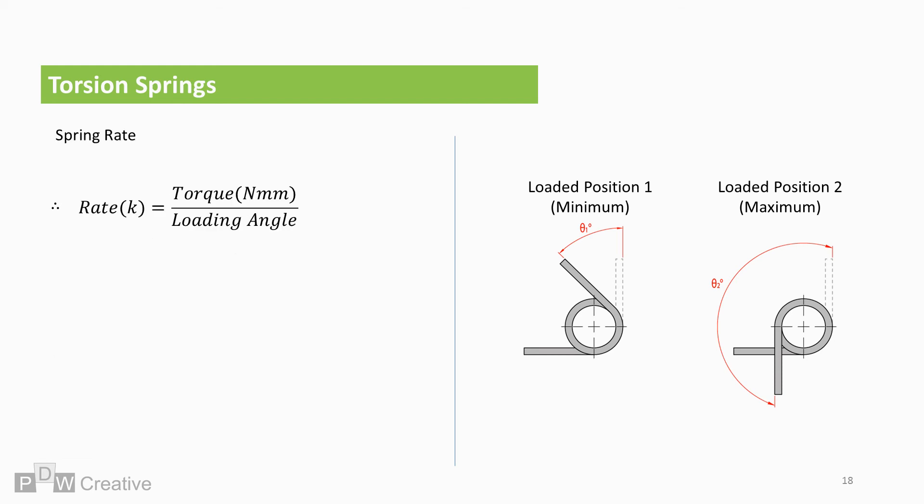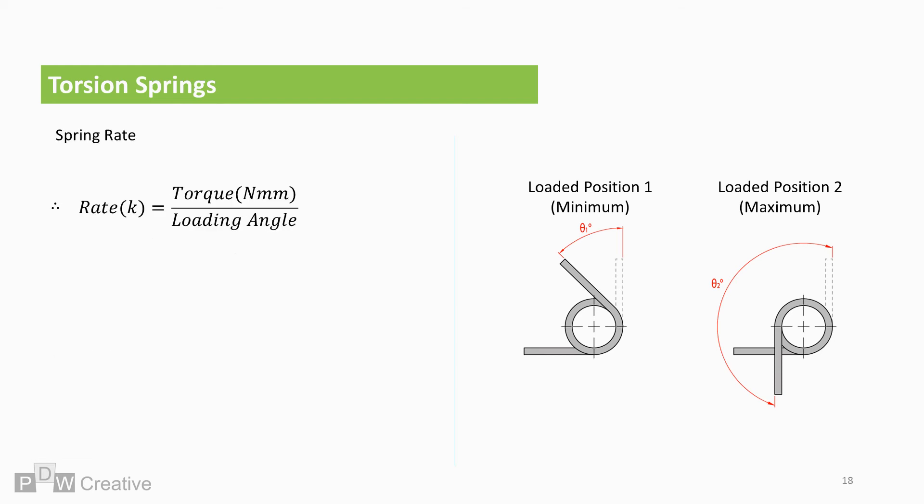The spring rate is torque divided by loading angle. We need to pick one of the loading positions, understand our loading requirement and transfer this to the torque. This is explained in the previous video so I'm just going to assume we know our torque requirement is based on loading angle 2, the highest loading angle.